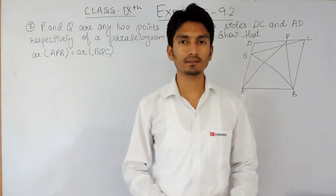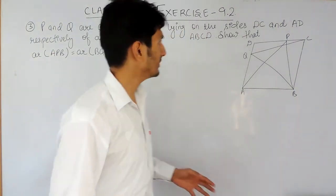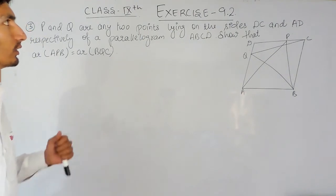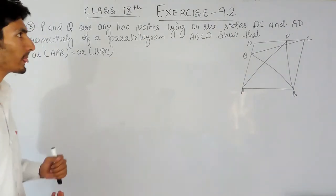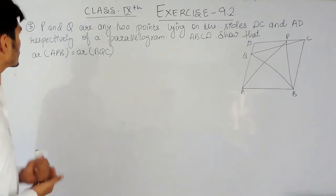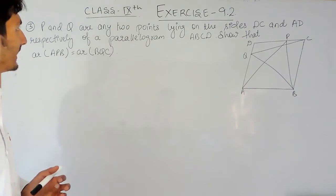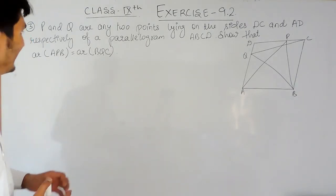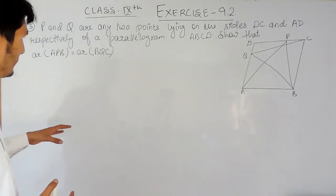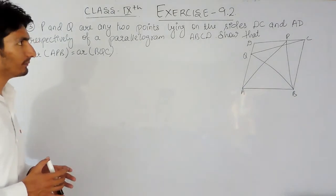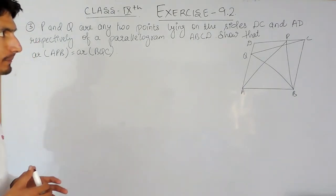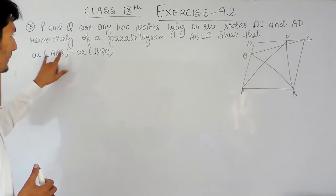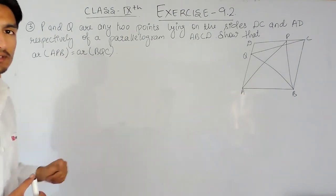Hello everyone. In this video we are going to solve question number 3 of exercise 9.2. The question says: P and Q are any two points lying on the side DC and AD respectively of a parallelogram ABCD. We have to show that the area of triangle APB is equal to the area of triangle BQC.